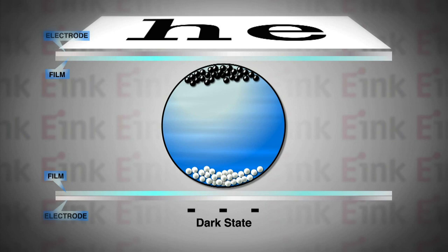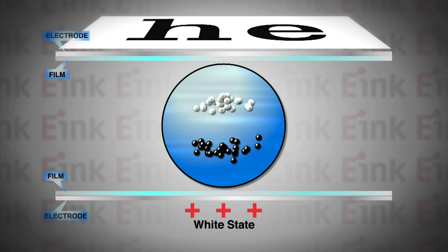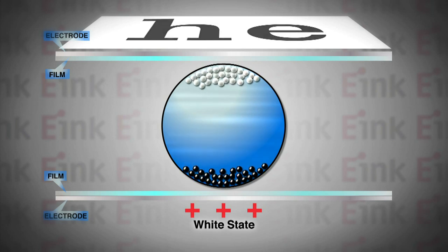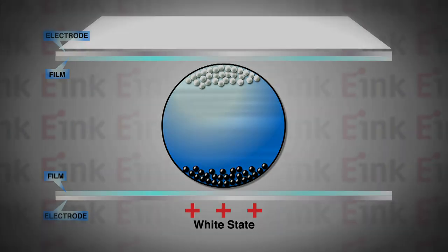Simultaneously, the white particles move to the bottom where they are hidden to the viewer. By reversing this process, the white particles are driven to the top of the capsule, making the top surface appear light.